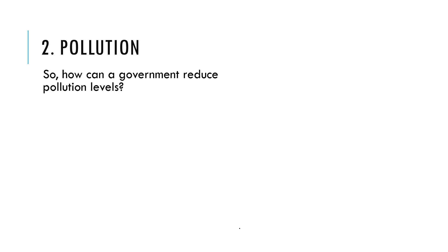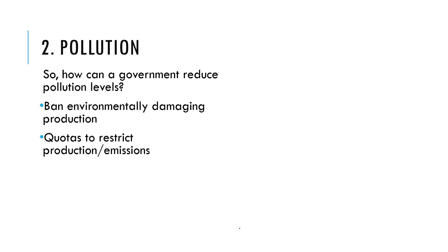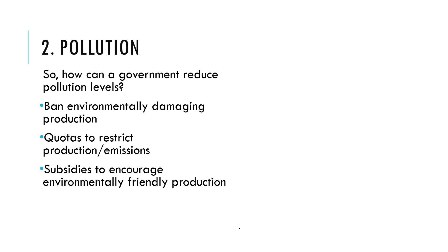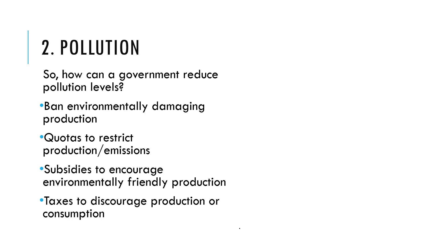Governments don't want a lot of pollution — it's bad news and a negative externality. To reduce it, governments could ban production that hurts the environment, put in place quotas to restrict production or emissions, or give subsidies to firms to encourage environmentally friendly production. The government could also impose taxes, which would increase production costs and discourage production or consumption in areas the government wants to stop.